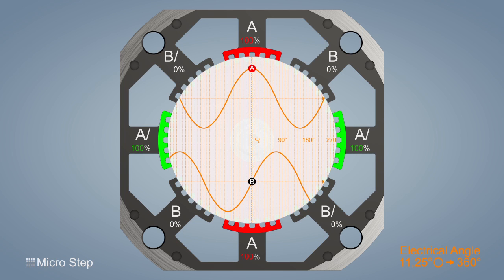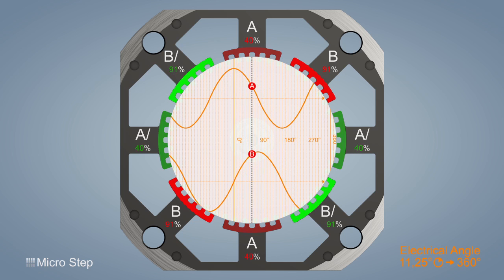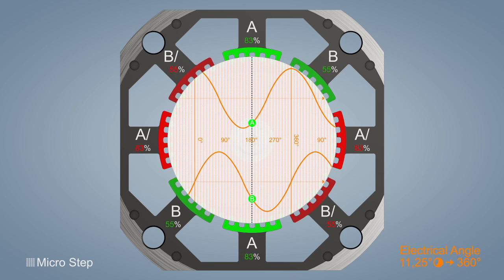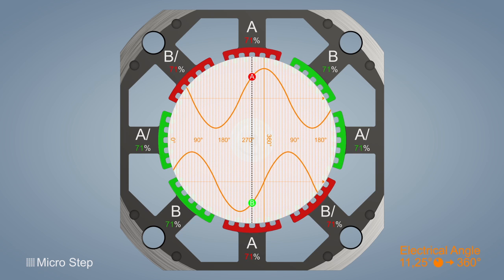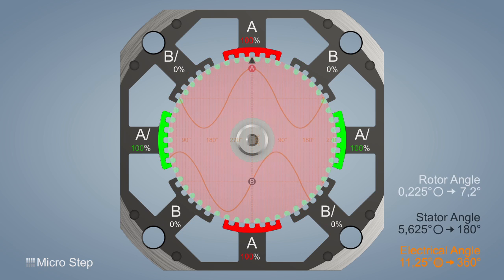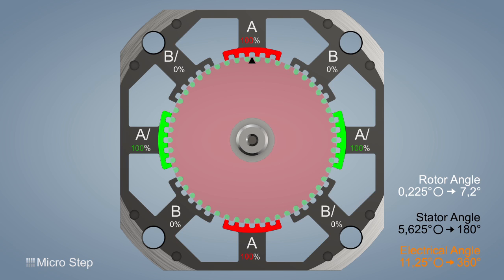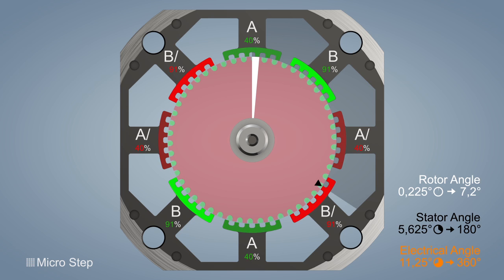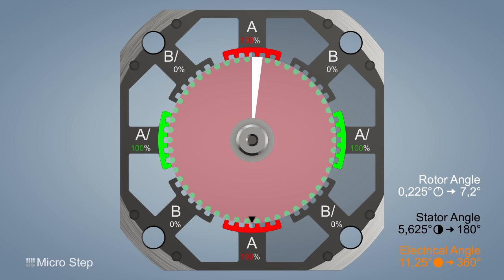In microstep mode, the two phase currents are similar to a sine curve. Here the stator field turns by 5.625 degrees and the rotor by 0.225 degrees. Because of the lower current levels, the motor runs smoother and the resonance behavior and step angle are improved, but please note the step angle is less precise.